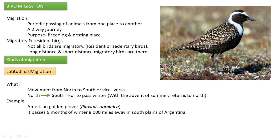Birds do migration mainly for breeding and also to find a suitable nesting place. We can classify birds into migratory and resident birds. Not all birds are migratory. Some birds will not migrate even once during their life cycle — such birds are called resident or sedentary birds. Other birds migrate frequently, over long or short distances, and are called migratory birds.